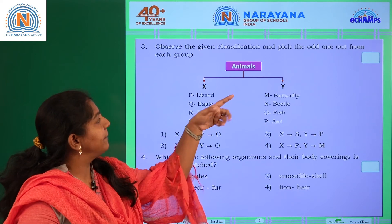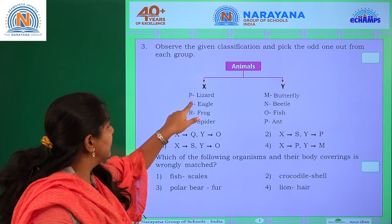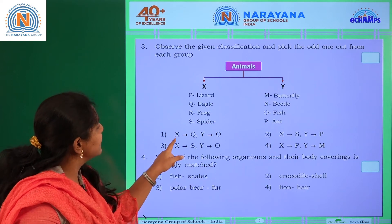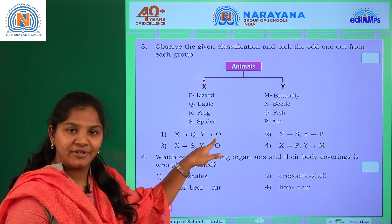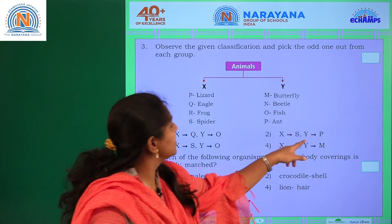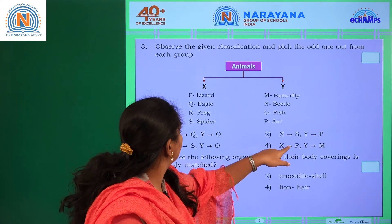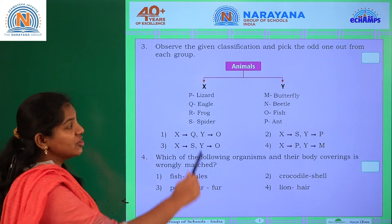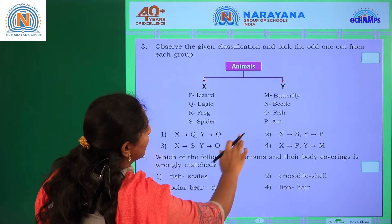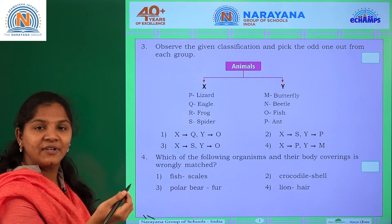After the given classification, pick the odd one out from each group. X column has: lizard, eagle, frog, spider, butterfly, beetle, fish, and ant. The odd one out is: X equals spider (S) and Y equals fish (O), because the combination of spider and fish is not relevant — their classifications as reptiles, amphibians, or other groups are different. So the third option is correct.